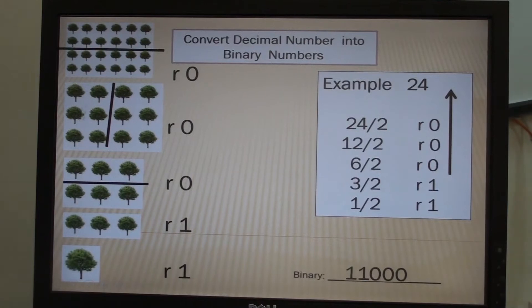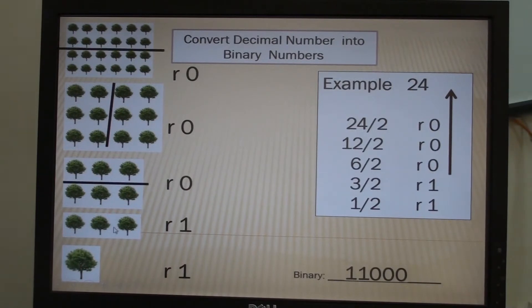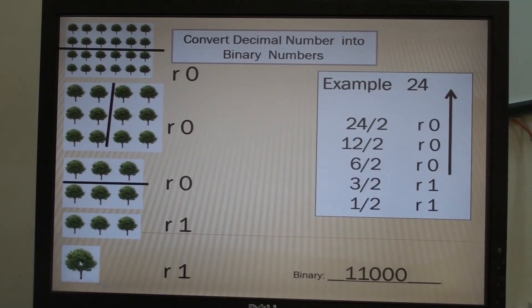We already have 12. Now divide again: 12 divided by 2 is 6, remainder is 0. If we divide 6 divided by 2 is 3, so there is no remainder. Then 3 divided by 2 is 1, remainder 1. Then 1 divided by 2 would be 0.5, but instead you will put remainder 1.